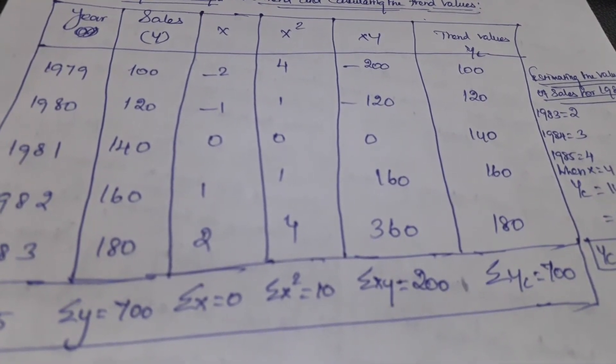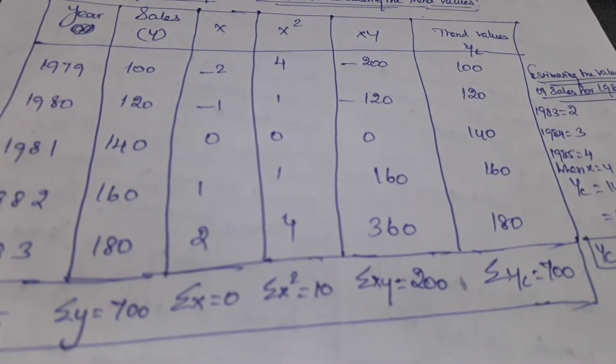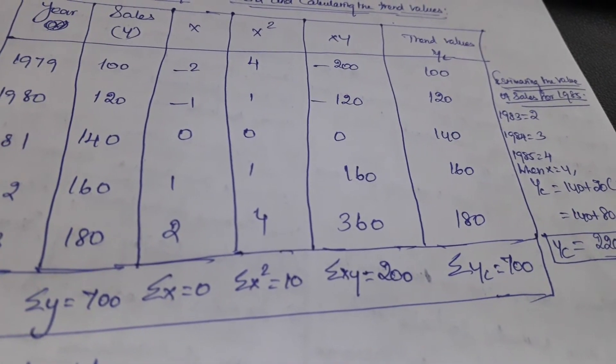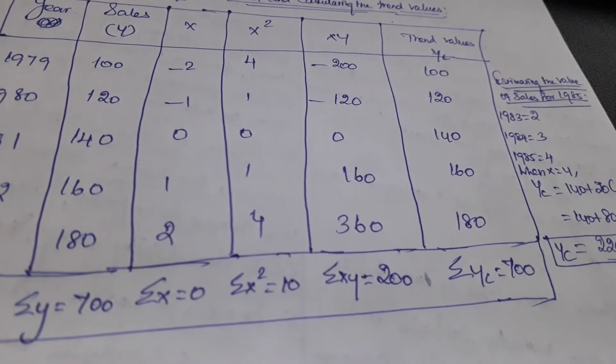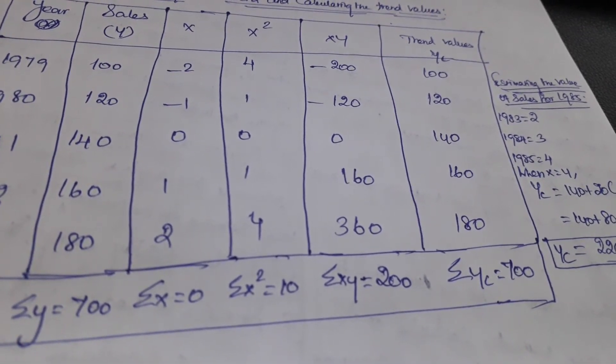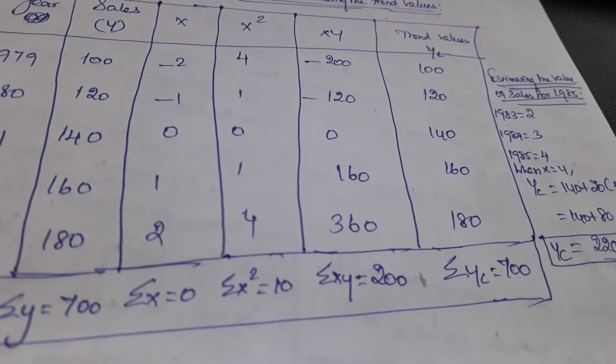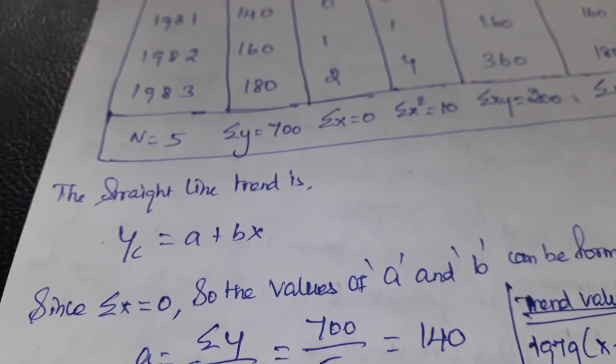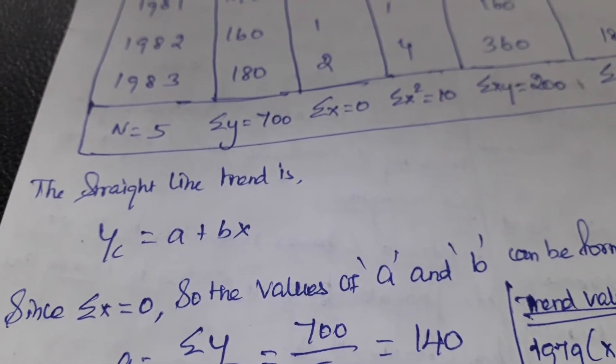After that we total them: summation of X squared equals 10, and summation of XY equals 200. The trend values we denote by Yc. We will look at the trend values after finding the equation. The straight line trend is Yc = a + bX.